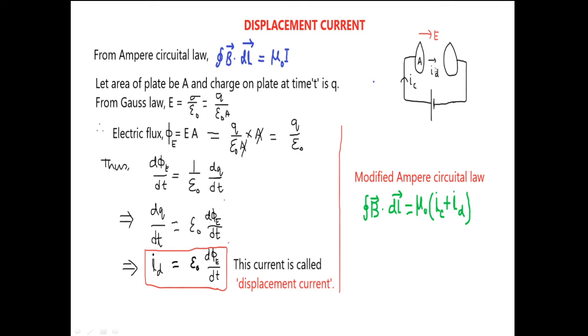But if we see within the space of the two parallel plates, there is no any connecting wire. So if we generate here or create a loop, we can say there is no current through this loop.